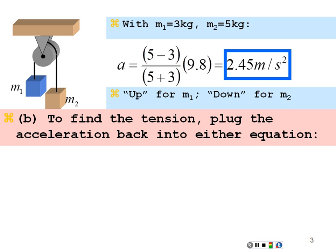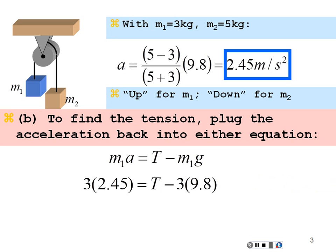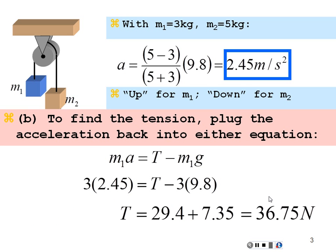To find the tension, we plug this acceleration back into equation number 1 and solve. M1 times A equals tension minus M1G. So 3 times 2.45 equals tension minus 3 times 9.8. Therefore tension equals 3 times 2.45 plus 3 times 9.8, which is 7.35 plus 29.4, or 36.75 newtons. If we plug this acceleration into the other equation and solve for T, we get the same answer: 36.75 newtons.